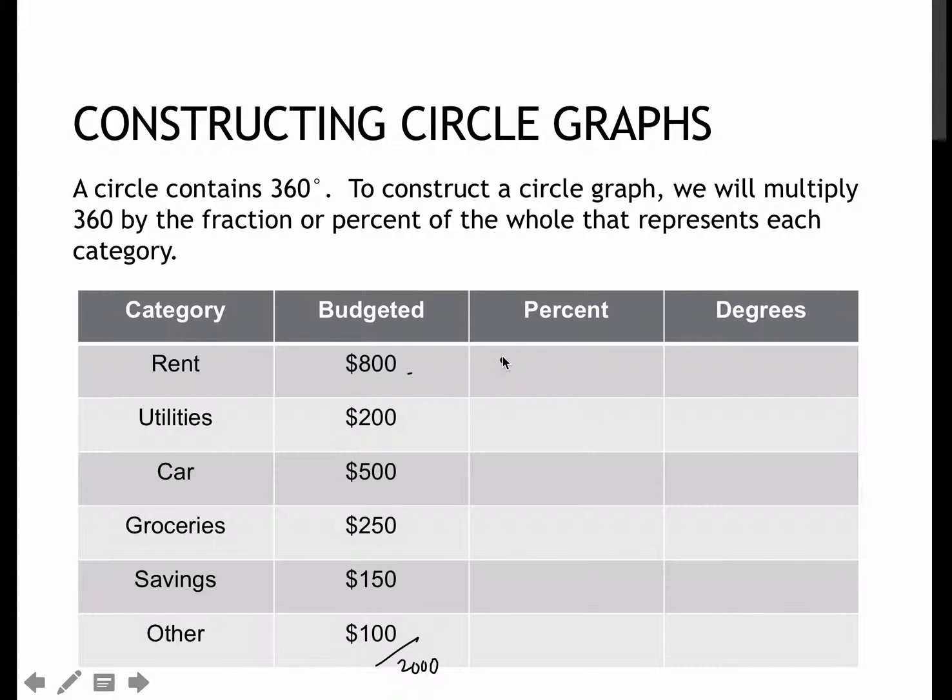So to find the percent, I'm going to put 800 over 2,000, and you can turn it into a percent or to a decimal or simply reduce the 800 over 2,000. And that gives me 0.4 or 40%.